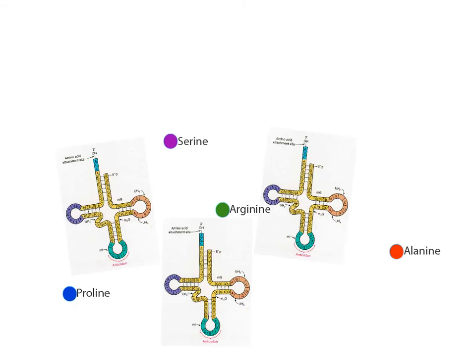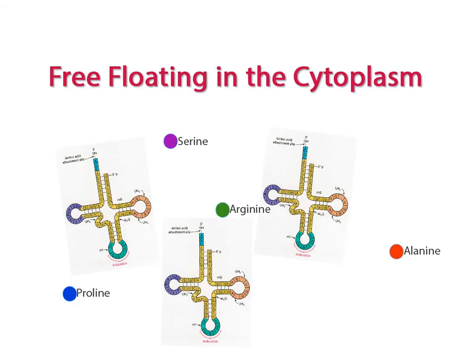tRNA and amino acids are found free-floating in the cytoplasm. The tRNA molecule has a triplicate code of nucleotides on one end called an anticodon. Enzymes are responsible for binding the correct amino acid to the correct tRNA molecule.